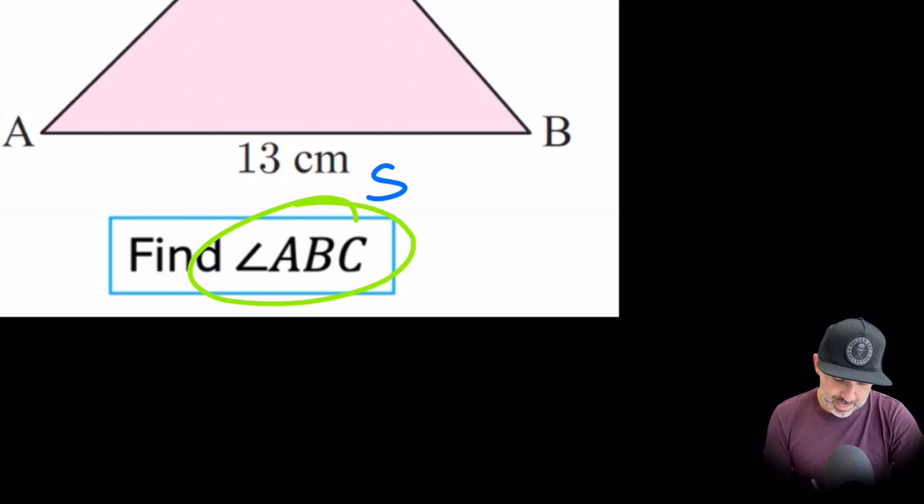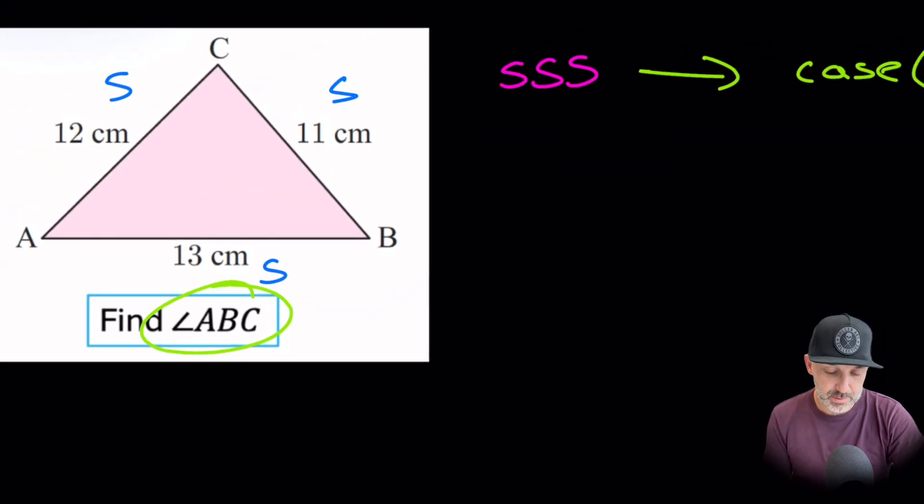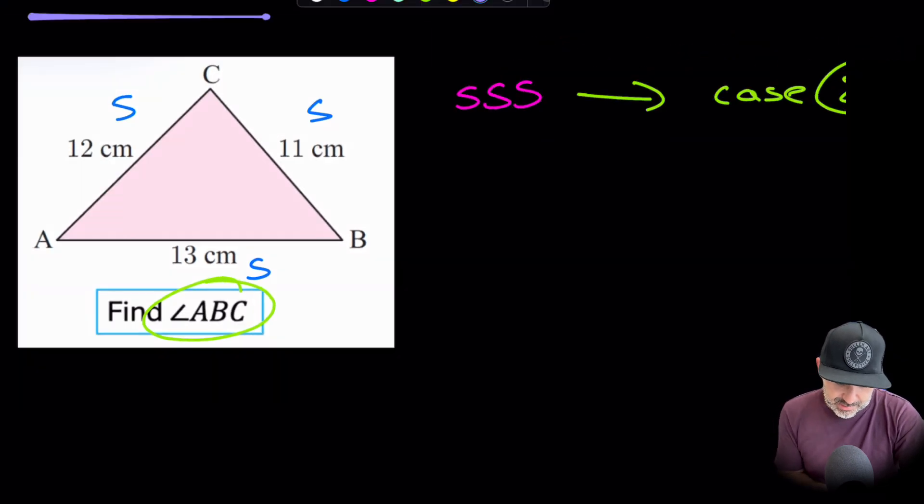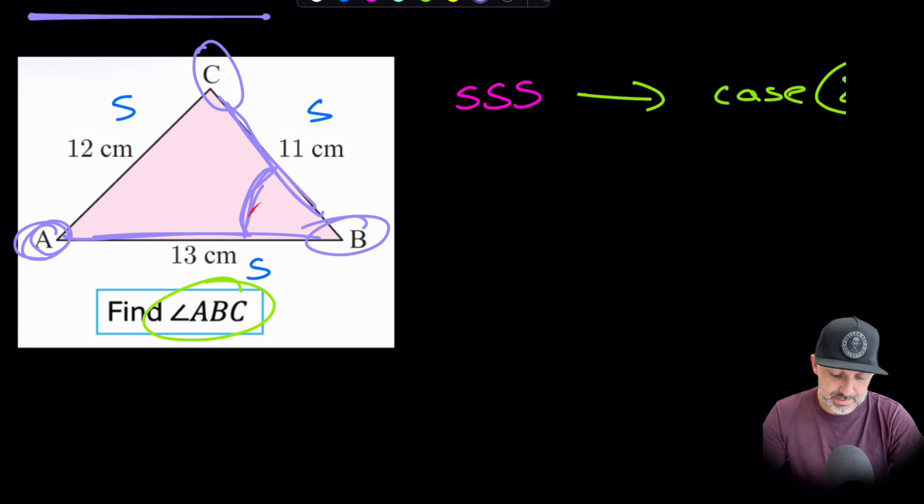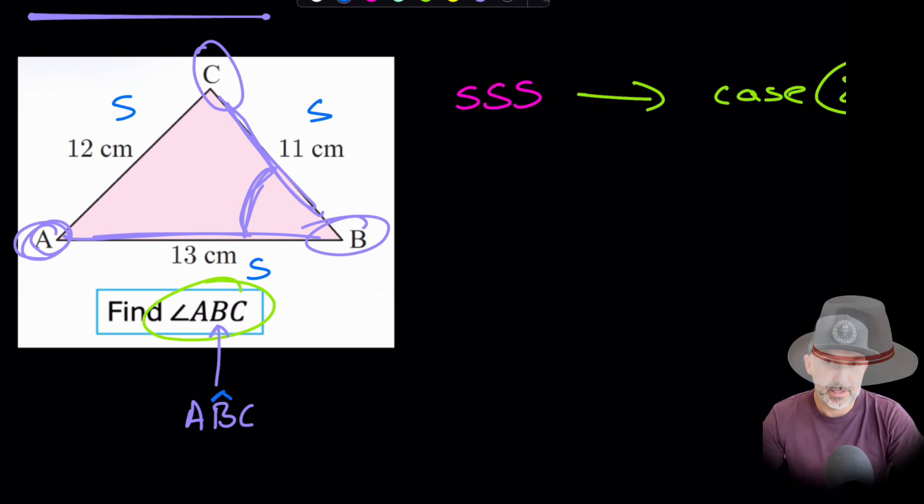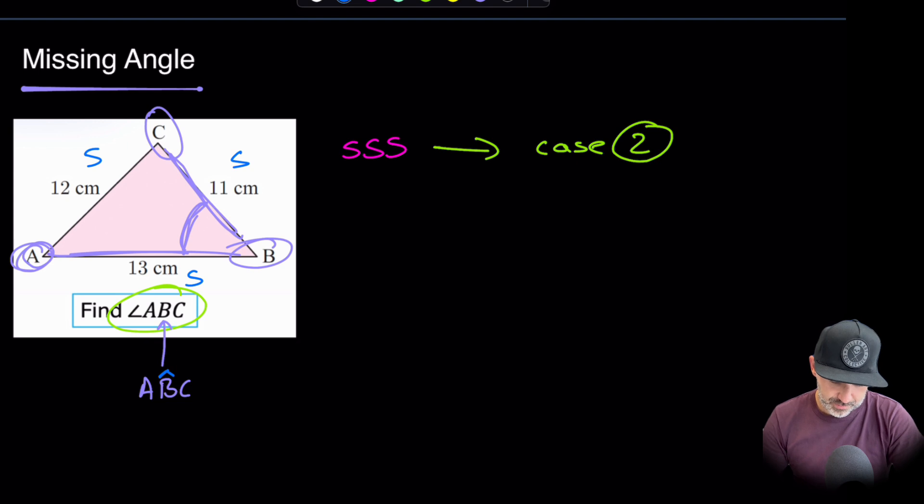Find angle ABC. So what does that actually mean? Well, ABC means we start at A, and then we go to B, and then we go to C. That is always the angle that is sandwiched in between. It's always the middle value there. Sometimes they write A, B, C with a little hat on the top of B. It just depends what course you're following. Therefore, we just need to find that angle.